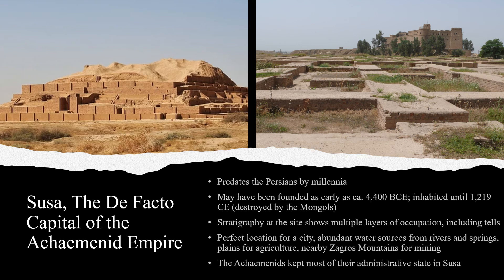While Persepolis may have been the de jure legal capital of the Achaemenid Empire, Susa was the de facto cultural capital of the Achaemenid civilization. Susa actually predates the Persians by millennia — it may have been founded as early as 4400 BCE. The city was also inhabited until 1219 CE, when it was destroyed by the Mongols. Stratigraphy of the site shows multiple layers of occupation, including tells, seen here.